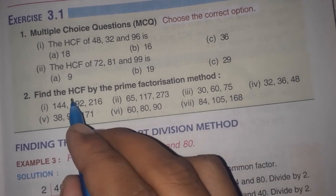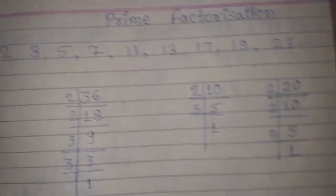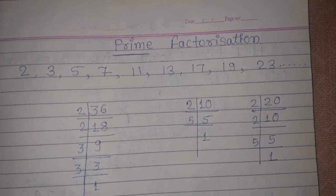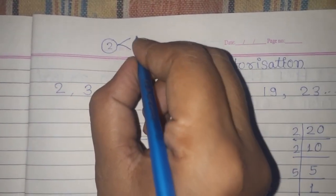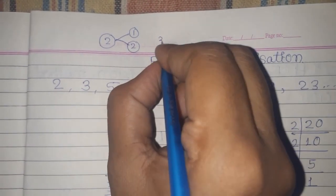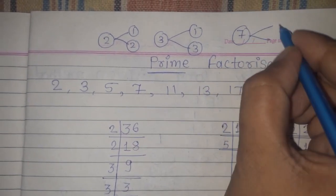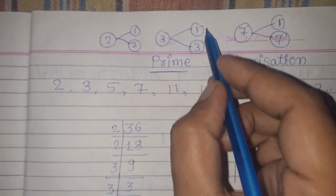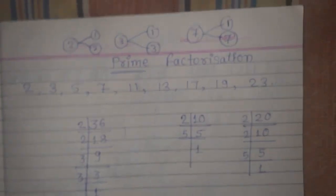Students, first of all, I will tell you what is prime factorization. The word in prime factorization is 'prime'. Prime means numbers that have two factors. Suppose 2 — it has 2 factors: 1 and 2. 3 has factors 1 and 3. 7 has factors 1 and 7. These numbers have only 1 and themselves as factors, so they are in the category of prime numbers.